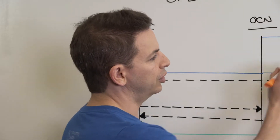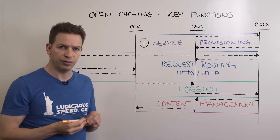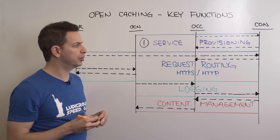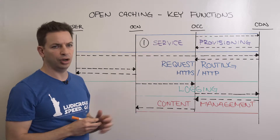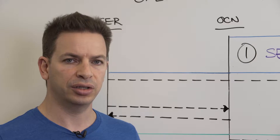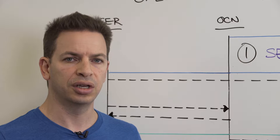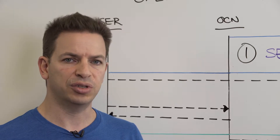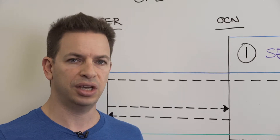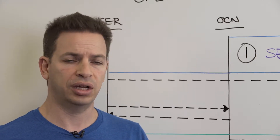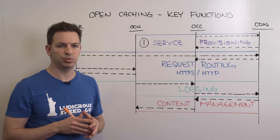A typical call flow starts with service provisioning, which is the first interface we're defining. During service provisioning, a CDN tells an open cache controller the various criteria for the delivery services it wishes to delegate — stuff like what host names are involved, how to calculate cache keys, whether URI signing is involved, whether we're using HTTPS or HTTP, QUIC, or any other transport protocols — and basically allows the OCC to provision that service.